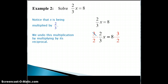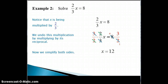Notice that the 3's will cross cancel and the 2's will cross cancel, which will leave us with x on the left side. We can also do some cross reducing on the other side since 2 goes into 8 four times and 2 goes into itself once. Simplifying both sides leaves us with x equals 12, so this equation has a solution set that includes one solution of 12.